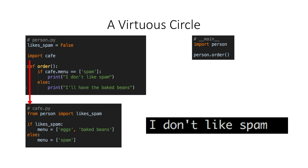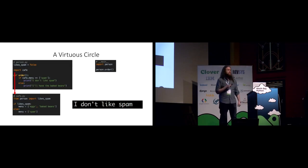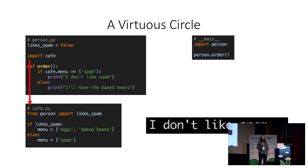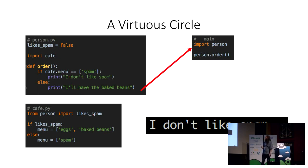The person first defines the variable the cafe is going to need, then imports cafe. Now cafe can import that 'likes_spam' variable from person — and this time it's actually going to work. Here's why: as soon as I started importing the person module, Python created a module object and put it in the module cache. So when cafe tries to import person, it gets that module out of the cache. The reason it failed last time is that when person came out of the cache, the variable the cafe needed wasn't defined yet. But now it is defined by the time it's needed.